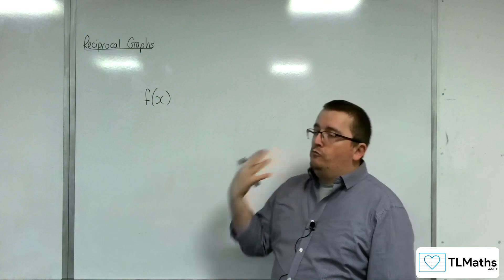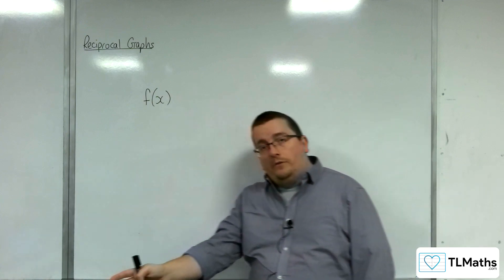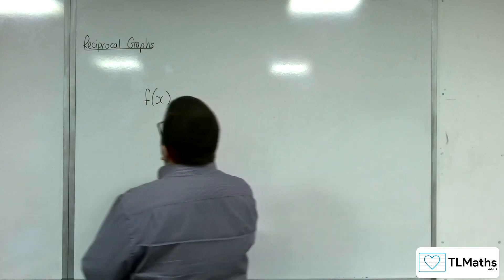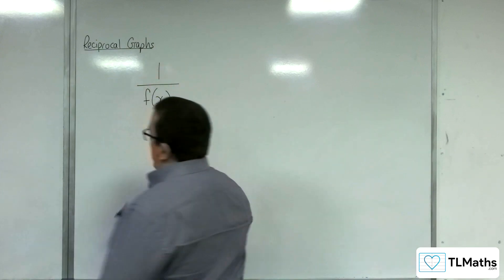So this section, we're going to be looking at reciprocal graphs. So the idea is that given an f(x), you should be able to sketch 1 over f(x).